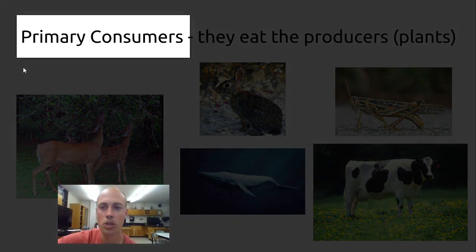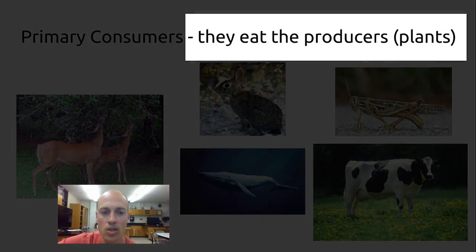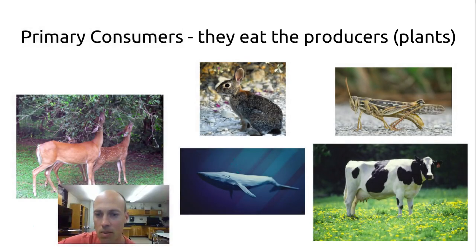The first level above producer is called a primary consumer. These are the animals that eat the producers. They eat plants. Typically, they're herbivores. You can get omnivores that will be the primary consumer in a situation. But a primary consumer, again, is the animal or thing that eats the producer.